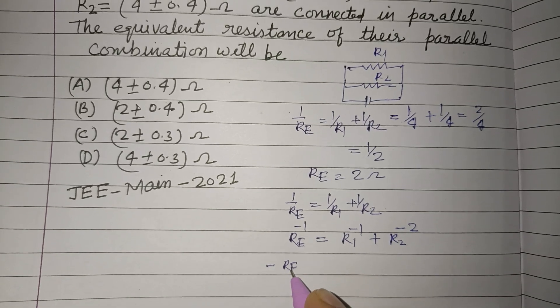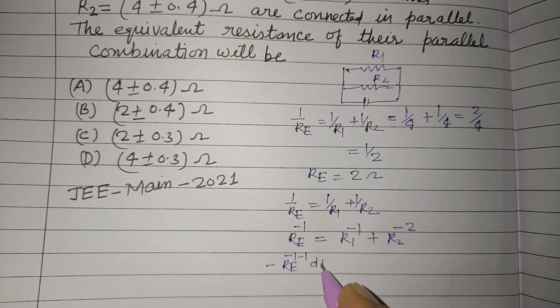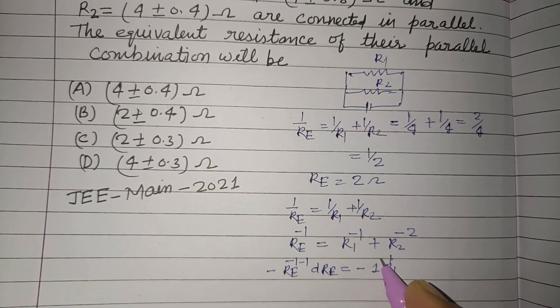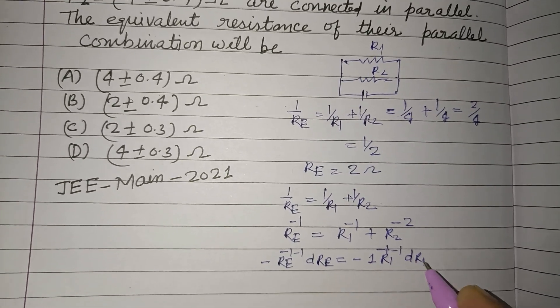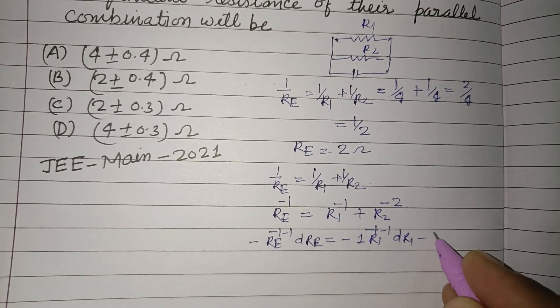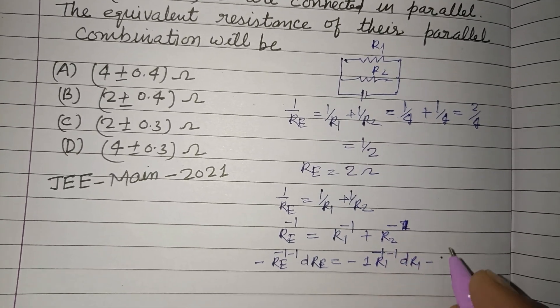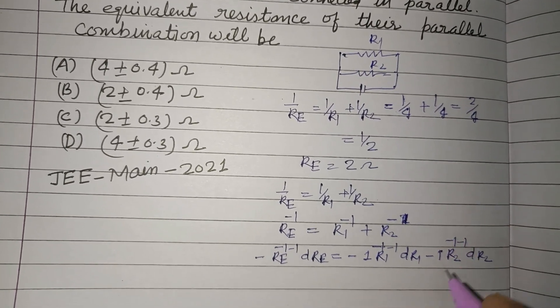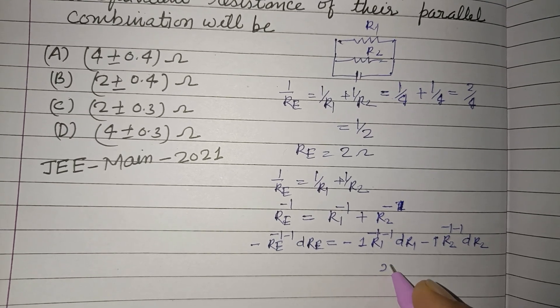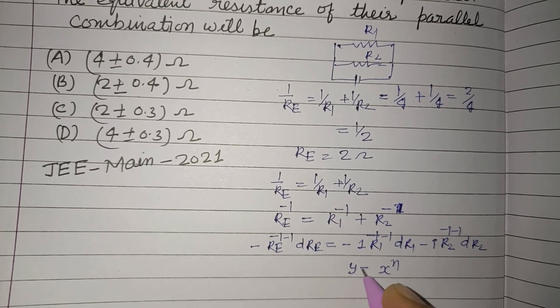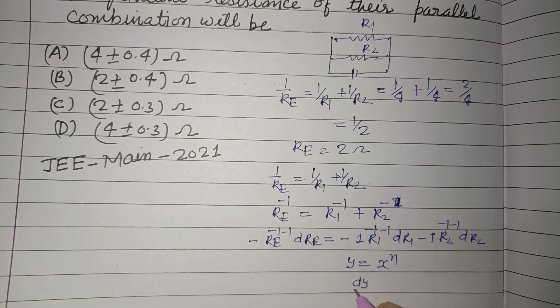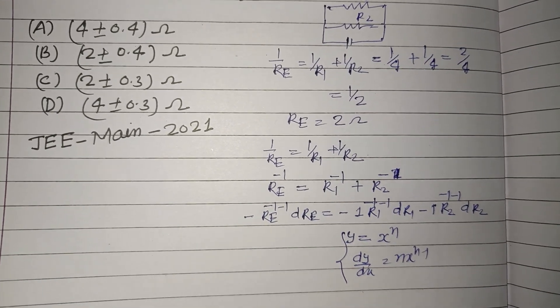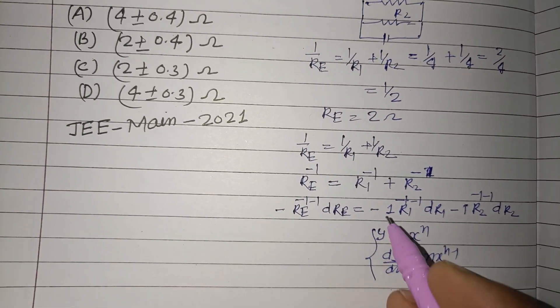Minus RE minus 1 minus 1 dRE equal to minus 1 R1 minus 1 minus 1 dR1 minus R2 minus 1 minus 1 dR2, using the concept that X to the power n, dy by dx equal to n X to the power n minus 1. This is the differentiation formula.